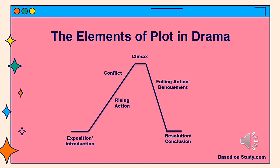First is exposition or introduction. It is an explanation of background information to get across the drama. The second is rising action. It is the element that occurs after the exposition and builds the conflict. The next is conflict. It is the element of drama that involves the struggle of two opposing forces.